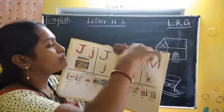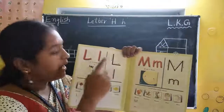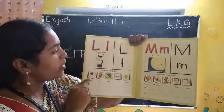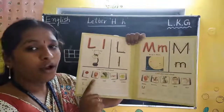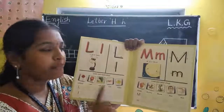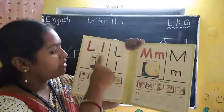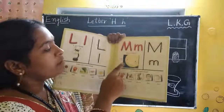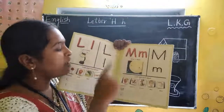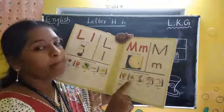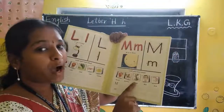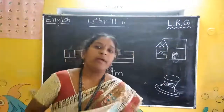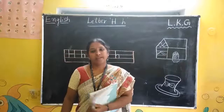Capital L and small L. L for lamb, L for lollipop, L for lion, L for leaf, L for lips, L for lemon. Capital M and small M. M for moon, M for mango, M for monkey, M for mouse, M for man, M for milk. Practice well, children. Practice at home. Bye, children.